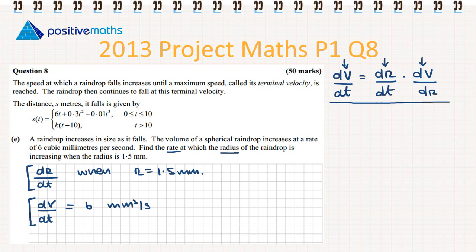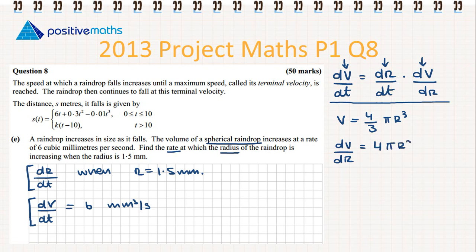Since it is a spherical raindrop, we write down the volume of a sphere: V = (4/3)πr³. Now we have V in terms of r, so we can find dV/dr. Differentiating gives dV/dr = 4πr².